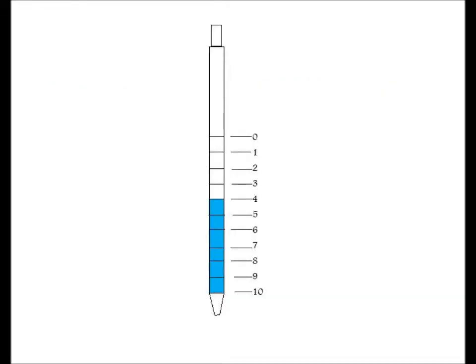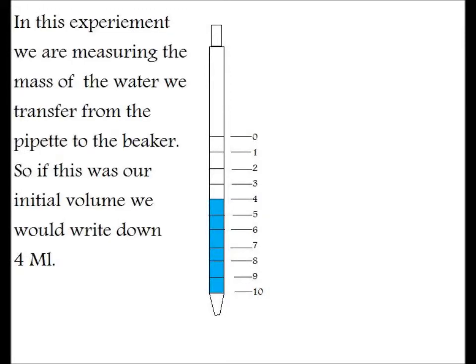On a pipette, the measurements are written from 0 to 10 from the top down. In this example, we would write 4 milliliters as our measurement. Rather than measuring how much room the water takes up, we measure how much space it doesn't take up.